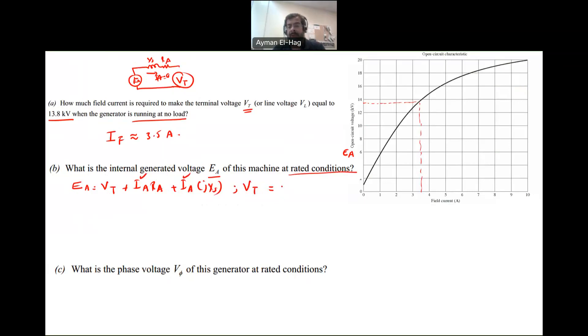Vt is the terminal voltage for single phase. Since the generator is Y connection, it's 13.8 kV divided by root 3, which equals 7.967 angle 0 kV. Ia is the armature current or phase current. For Y connection, the phase current equals the line current, so it's S divided by root 3 times 13.8 kV, which gives 2092 amps.